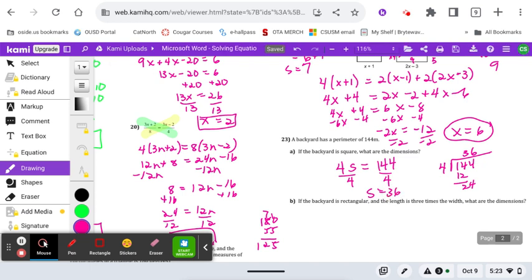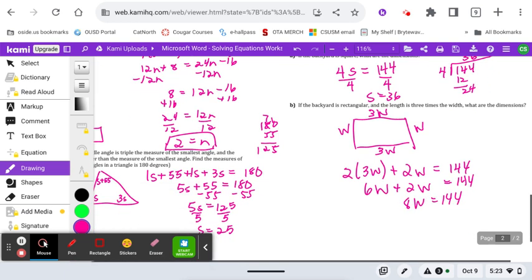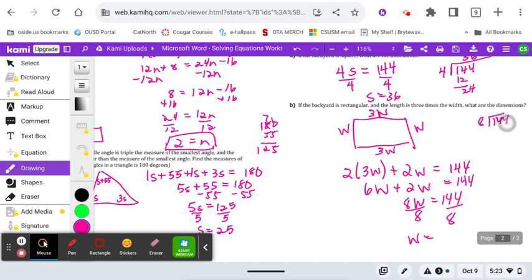If the backyard is rectangular and the length is 3 times the width, what are the dimensions? So there's 2 of the 3 W's and 2 of the W's. So if the width is 18, then the length is 3 times 18.